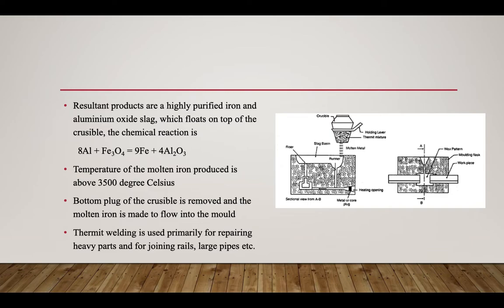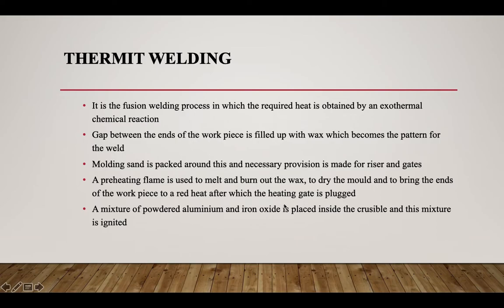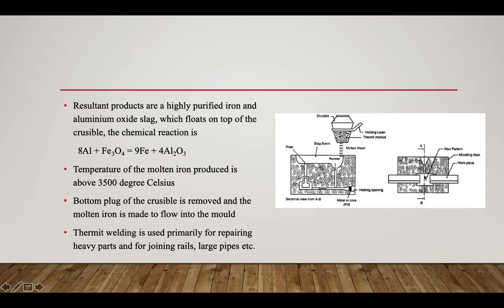The bottom plug of the crucible is removed and the molten iron flows into the mold. Thermite welding is used primarily for repairing heavy parts and for joining rails, pipes, etc. The wax pattern is first melted out so that the ends of the workpiece are at red heat condition, then the mixture of aluminum and iron oxide from the crucible is fed in and ignited, producing highly purified iron and aluminum oxide slag. This highly exothermic reaction results in the welding of the two metals.